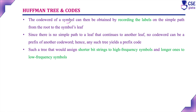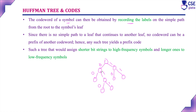The codeword of a symbol is obtained by recording the labels on the path from the root to the symbol's leaf. From root to leaf, the codeword will differ for each symbol — you will never get the same codeword. All left edges are marked 0 and right edges are marked 1. For example, if D is a leaf, its path might give codeword 011. The codeword for A might be 00, for M it is 11, and for S it is 10. Likewise, for every symbol you get a unique codeword.